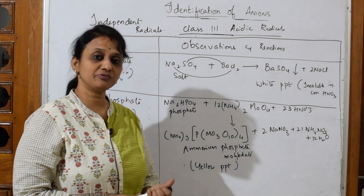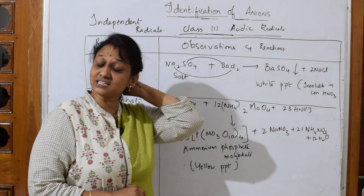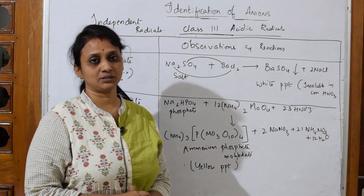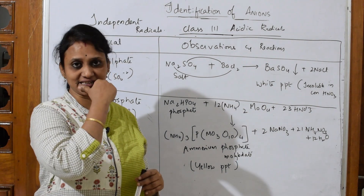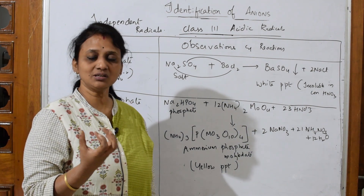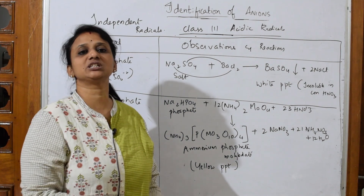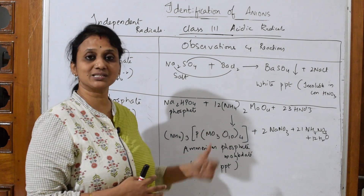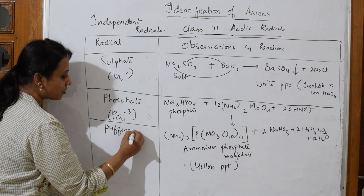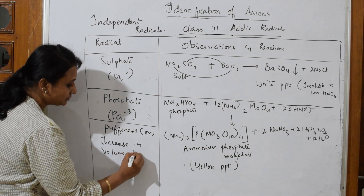Now let's test the phosphate anion. The preliminary tests are very important. First is the dry heating test — I've already shown you the different colors of different anions, and then the flame test. For phosphate, you take the salt in a dry test tube and heat it under a Bunsen burner flame. What happens is the salt increases in volume — it puffs up. When you see this increase in puffiness, you can directly say phosphate is present. So in the dry heating test, phosphate shows puffiness or increase in volume.